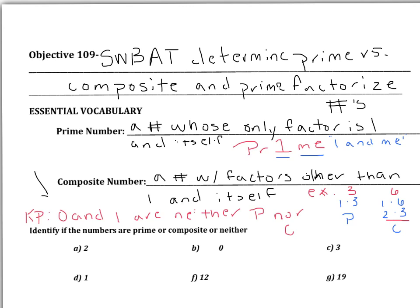The reason 0 is neither is that its only factor is 0. The reason 1 is neither is that its only factor is 1. In order for a number to be prime, it needs to have both 1 and itself as distinct factors. Since each has only one factor, neither 0 nor 1 is prime or composite.